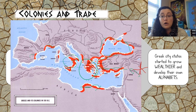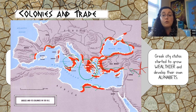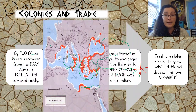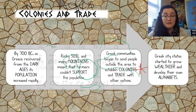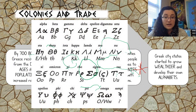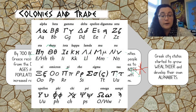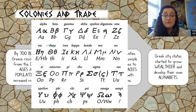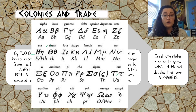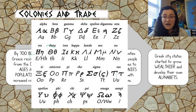Greek city-states, as they started to bring in trade, grew wealthier and developed their own alphabet. By about 550 BC we start to see more of a written Greek language. The Greek alphabet looks pretty similar to ones you might be familiar with — our American or English alphabet is originally based on the Greek alphabet. A lot of letters look very similar, and in fact this is the alphabet that Greek people still use today.